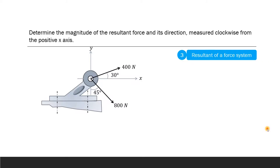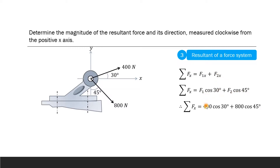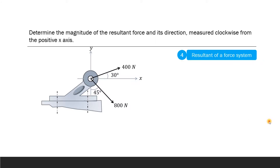Using these components we find the summation of forces in the x and y directions to determine the resultant in magnitude and direction. The summation of Fx equals F1x plus F2x, that is F1 cos 30 plus F2 cos 45, both positive. With F1 equal to 400 and F2 equal to 800, the summation of Fx comes out to 912.095 Newtons. Similarly, the summation of Fy equals F1 sin 30 plus F2 sin 45.